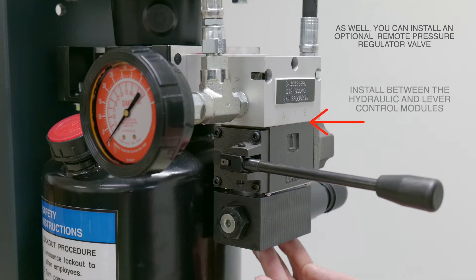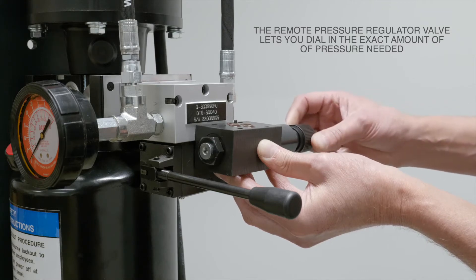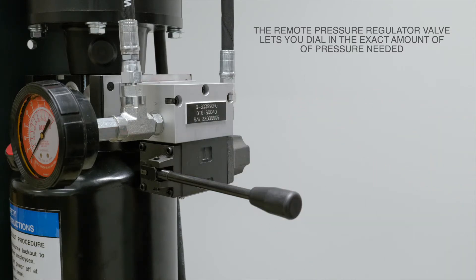You can install an optional remote pressure regulator valve in between the hydraulic and lever control modules. The remote pressure regulator valve lets you dial in the exact amount of pressure needed.